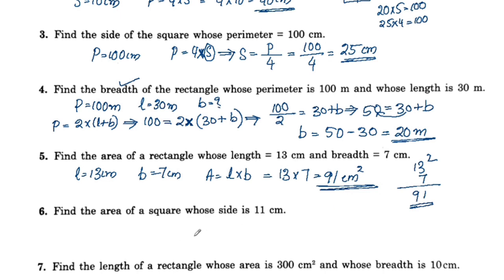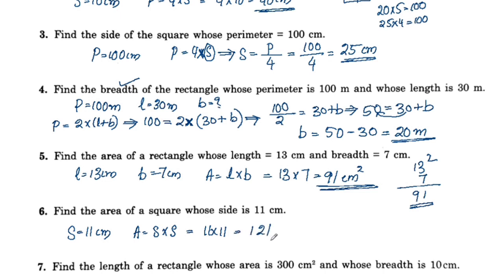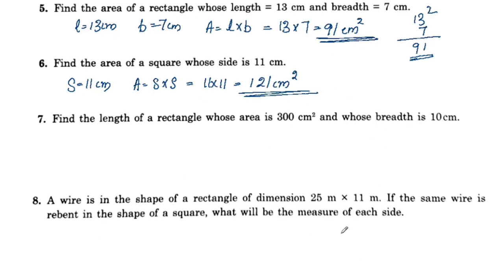Next question: find the area of a square whose side is 11cm. The side is 11cm. The area of a square equals side squared, so 11 times 11 equals 121 cm square. That is the area of the square.